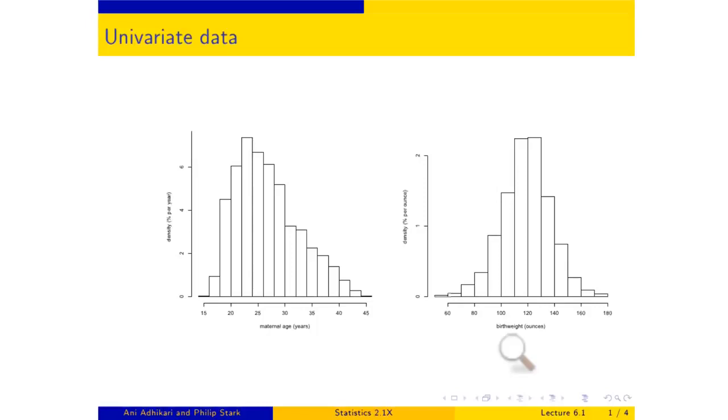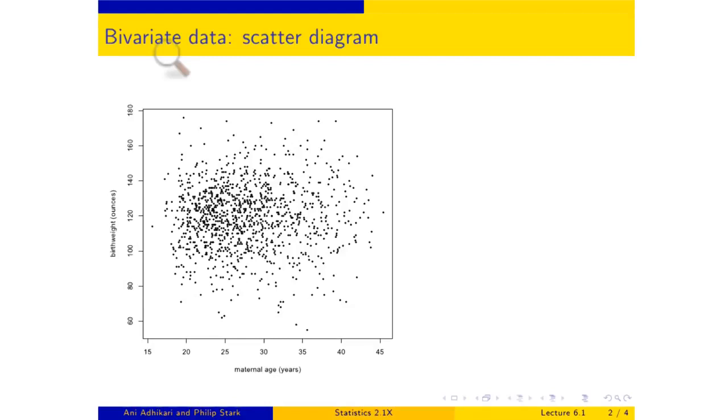So that's what we're going to do for the rest of STAT 2.1x, is to look at the relation between two variables. And so now a unit is not an individual. It's a pair, mother and baby. And on each pair, we are going to measure two variables, mother's age and baby's weight.